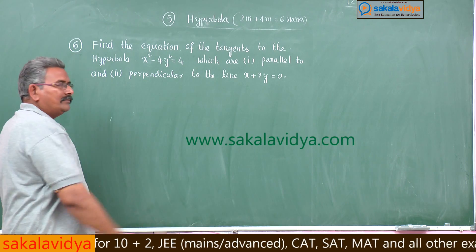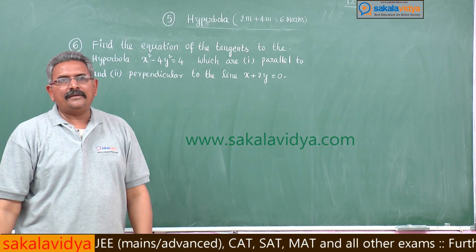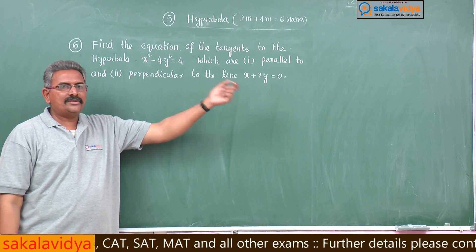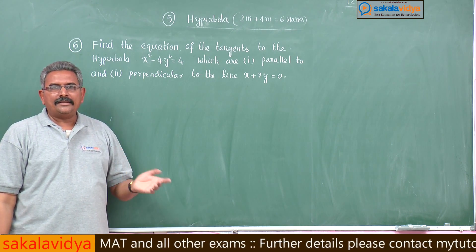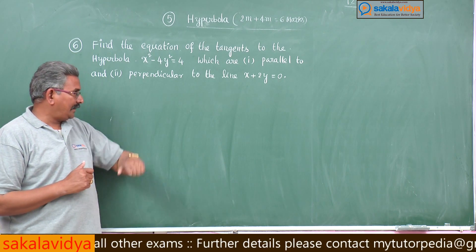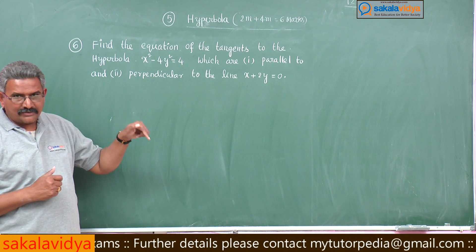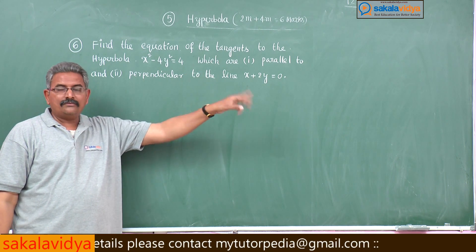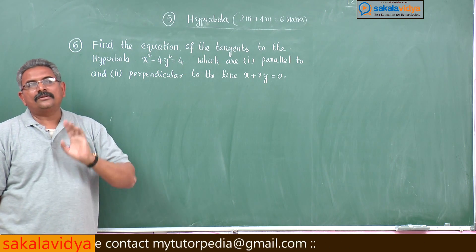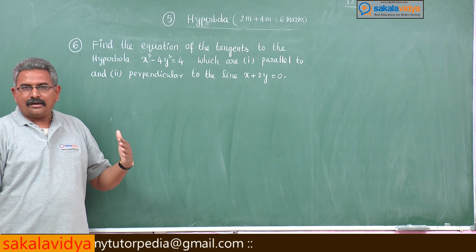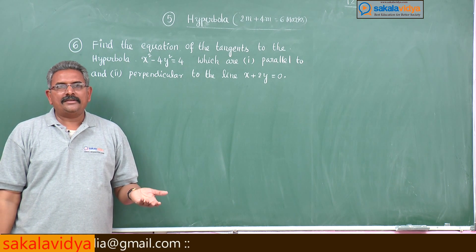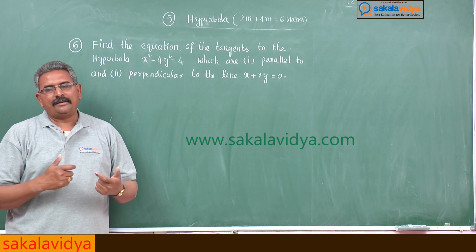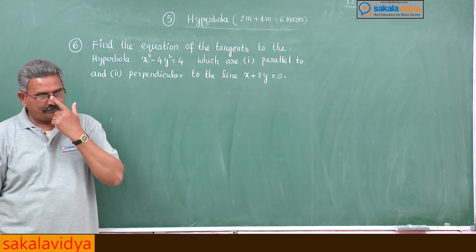For the second part, any equation of the tangent perpendicular to x + 2y = 0 can be taken as 2x - y + k = 0. Apply the condition for tangency to get the value of k. The required equations of the tangents can then be found in both cases.